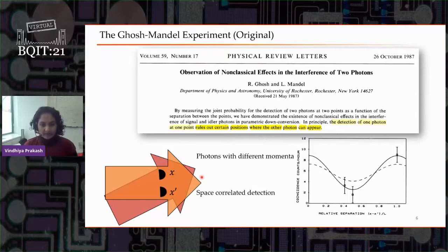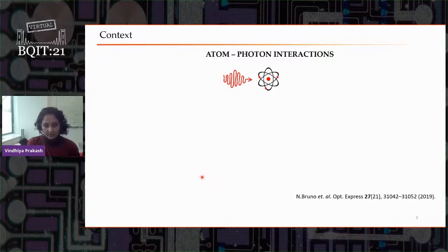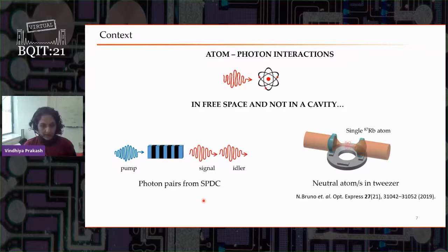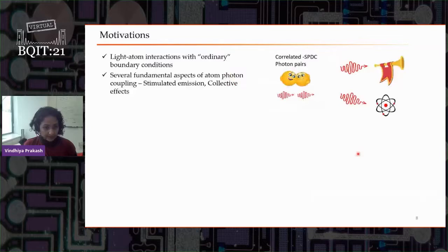I have introduced this interference experiment between distinguishable photons and said it is valuable for measuring and mapping narrow frequency features in narrowband photons. But how is this relevant to the work in our group? In our group, we are interested in atom-photon interactions at the level of a single photon and a single atom in free space, not in a cavity. For this, we take photons from SPDC, tailor them, make them narrowband, make them resonant, and try to interact them with a single trapped rubidium cold atom in a dipole trap. With this system, we can study light-matter interactions at the level of single photons and single atoms, including stimulated emission and collective effects like super- and sub-radiance. These studies can be done by using one photon as a herald and sending the other to the atom.